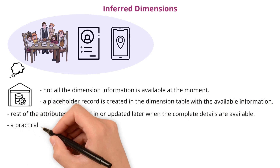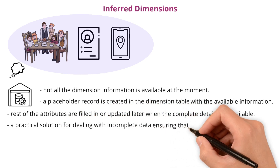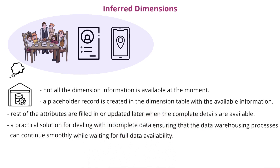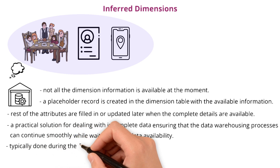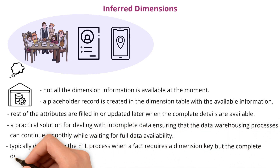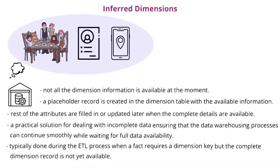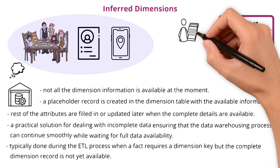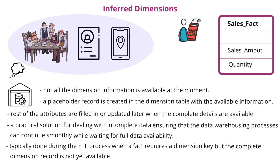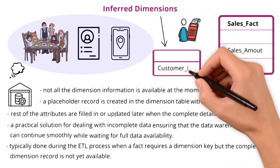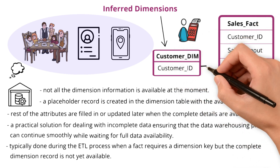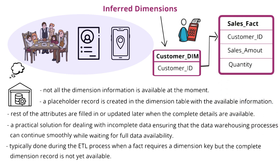Inferred dimensions are a practical solution for dealing with incomplete data, ensuring that the data warehousing processes can continue smoothly while waiting for full data availability. This is typically done during the ETL process when a fact requires a dimension key, but the complete dimension record is not yet available. For example, in a sales data warehouse, if a sale is made but the complete information about the customer is not yet entered into the system — perhaps the customer is new or data entry is delayed — an inferred member with available details like a customer ID or name is created in the customer dimension. This allows the fact table to be updated with a foreign key to the customer dimension, without delaying data processing.